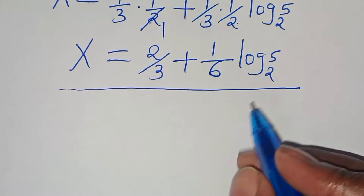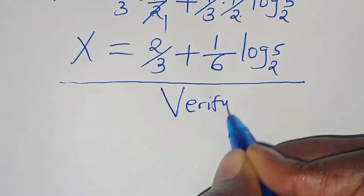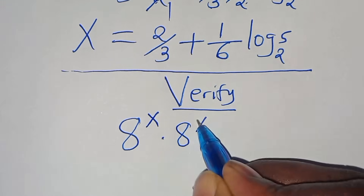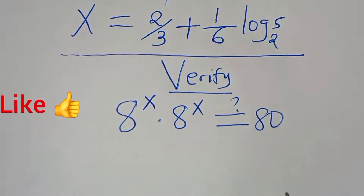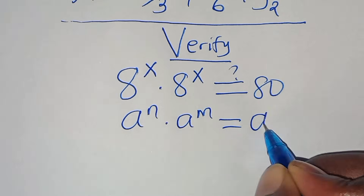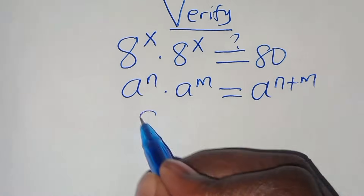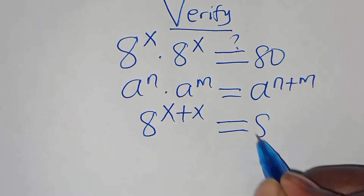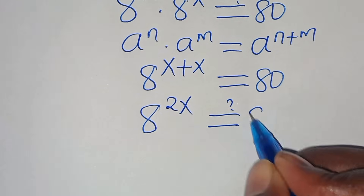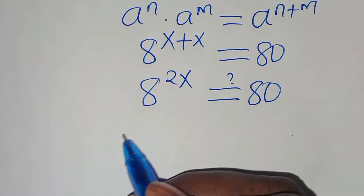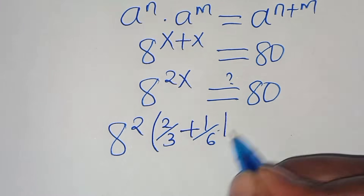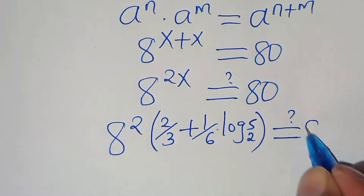The next step is to verify that this value of x satisfies the equation. We have 8 to the power of x times 8 to the power of x, which should give us a value of 80. This is in the form of A^n × A^m, which equals A^(n+m). So we have 8 to the power of 2x, which should equal 80. Substituting x, we have 8 to the power of 2 times (2/3 + (1/6)·log₂(5)), which should give us 80.